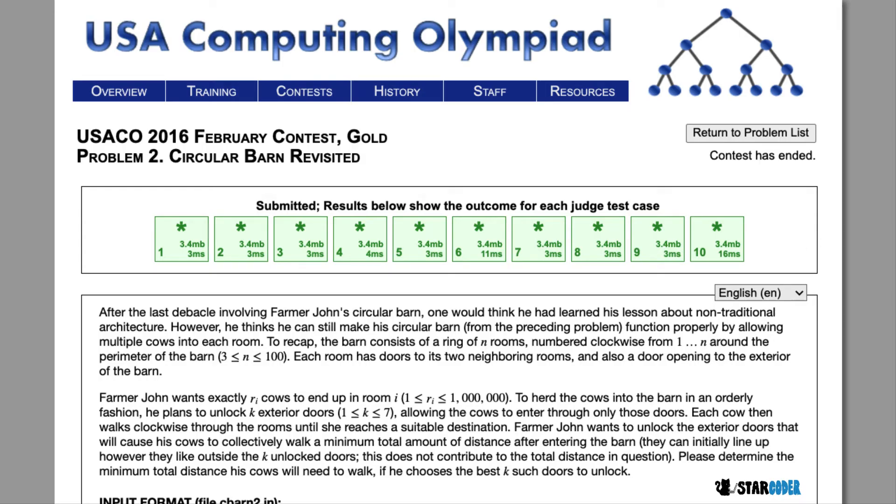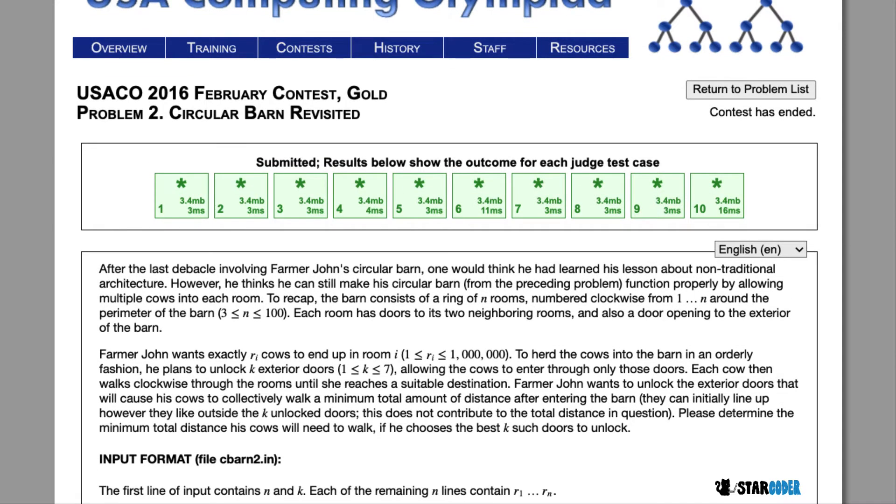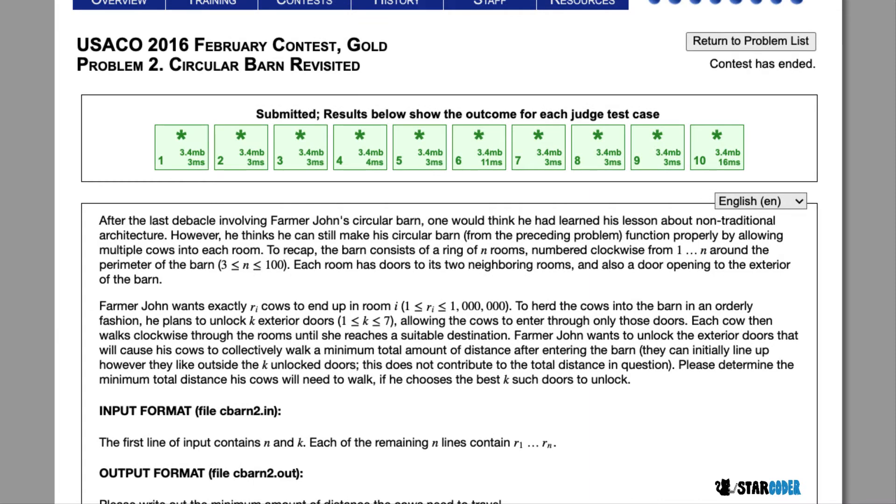Today we're going to be looking at the 2016 Gold Problem 2 Circular Barn Revisited. In this question, Farmer John has a circular barn where each room can contain a certain number of cows.